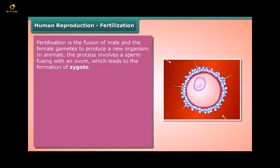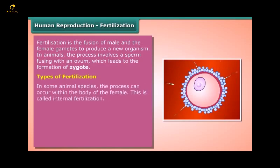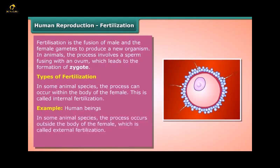Fertilization is the fusion of male and female gametes to produce a new organism. In animals, the process involves a sperm fusing with an ovum, leading to the formation of a zygote. In some species this occurs within the body of the female — called internal fertilization, as in human beings. In others it occurs outside the body of the female — called external fertilization, as in frogs and fishes.